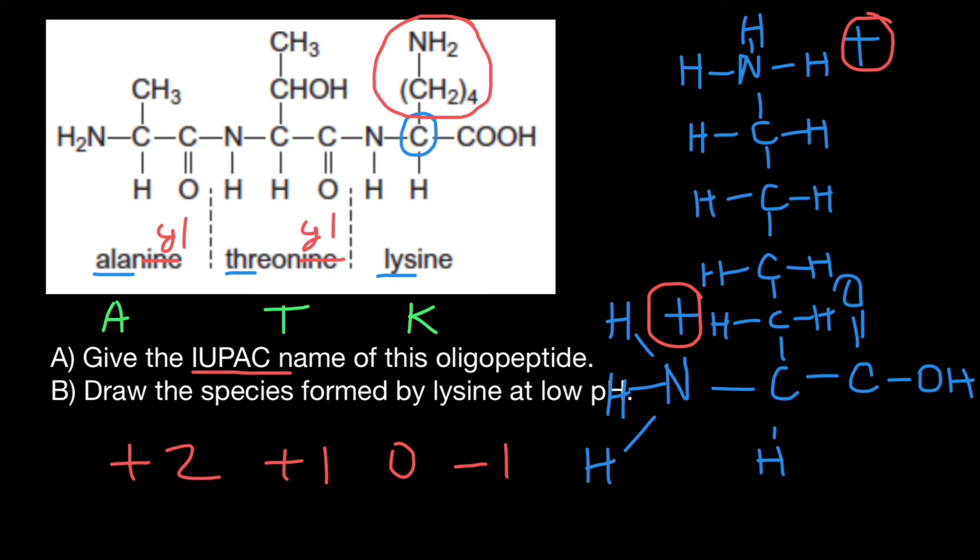So answering our question, draw the species formed by lysine at low pH. We can say that these species can belong to these two variants. They would have in a strong acid plus two charge, in the weak acid plus one charge. And this is all for today. Thank you for attention and see you in the next video. Goodbye.